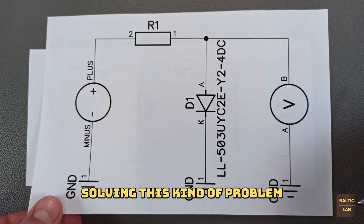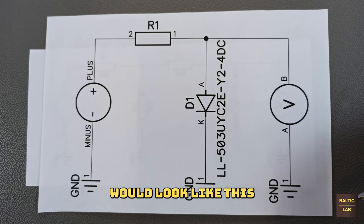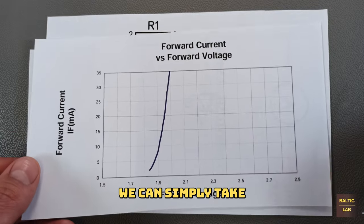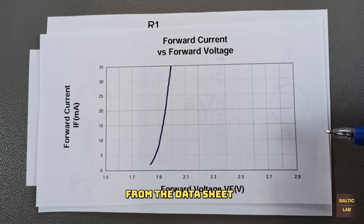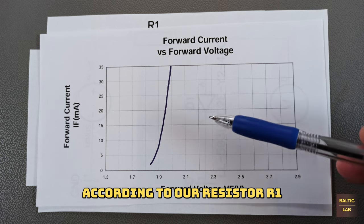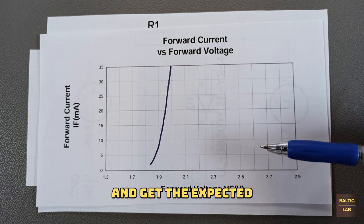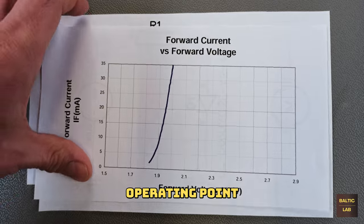Solving this kind of problem would be fairly easy if the circuit would look like this. In that case we could simply take the forward current versus forward voltage characteristics from the datasheet, draw a load line according to our resistor R1 and get the expected operating point.